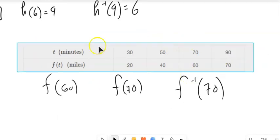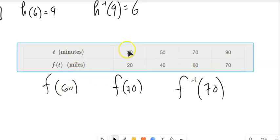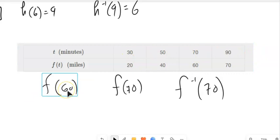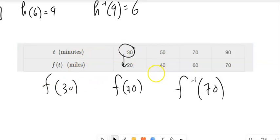So here's a table. And notice f of 60. I don't have an f of 60. I don't have an input of 60. So this is not resolvable. How about f of 30? Well, f of 30 would be 20.